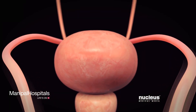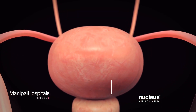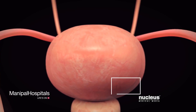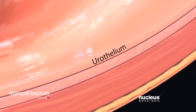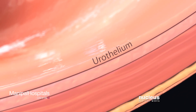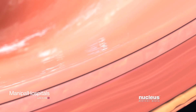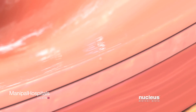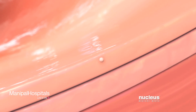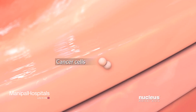The innermost layer of your bladder is called transitional cell epithelium, or urothelium. Transitional cell, or urothelial carcinoma, is the most common type of bladder cancer.